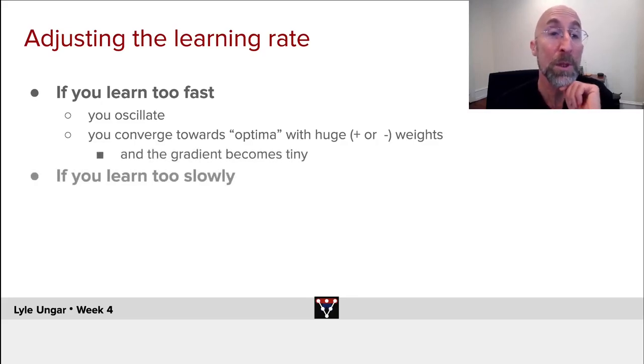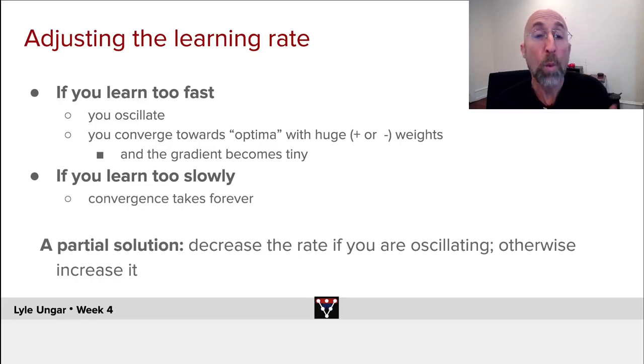If you learn too slowly, as I said, you learn too slowly. So one solution is to adjust the gradient step each time. If your error is going up, too big a learning rate. If you're going down, you're doing fine, maybe go down a little bit faster. That works nicely. We'll see there are a lot of other variations that play on that theme and work better.